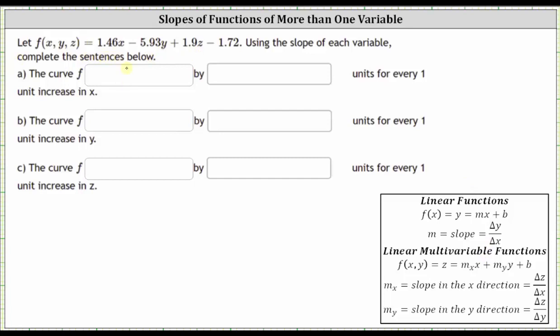So for the given function, the slope in the x direction, m sub x, is equal to positive 1.46. The slope in the y direction, m sub y, is equal to negative 5.93. And the slope in the z direction, the coefficient of the z term, is equal to 1.9.